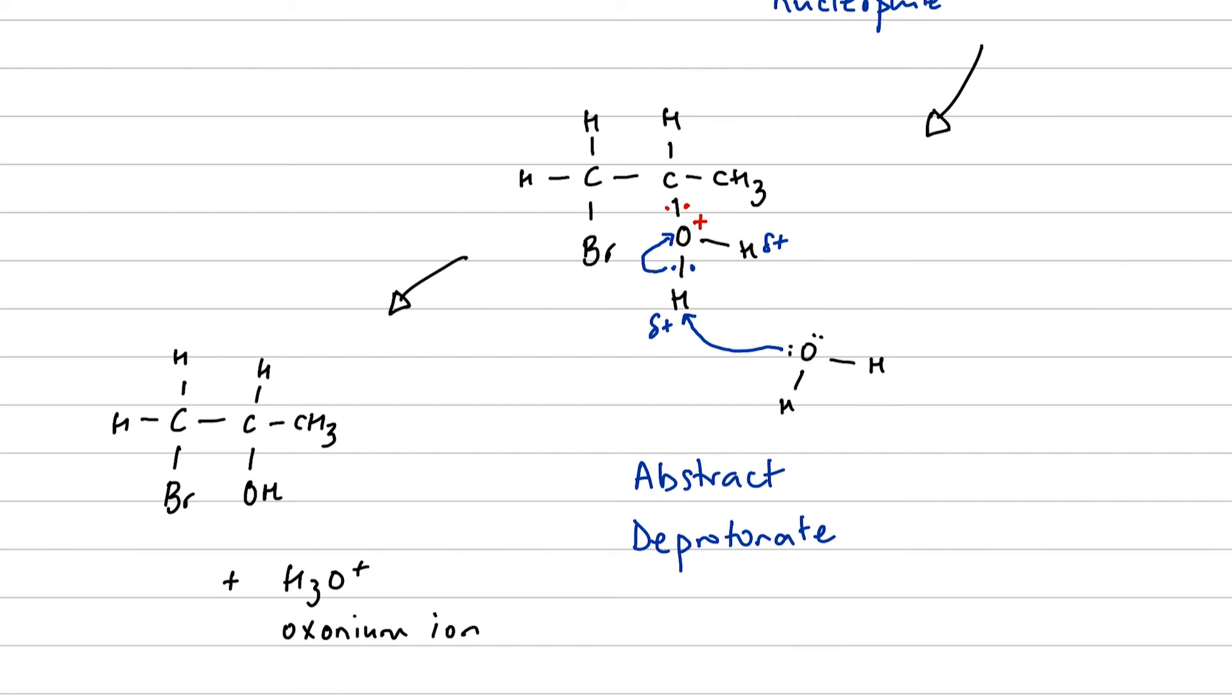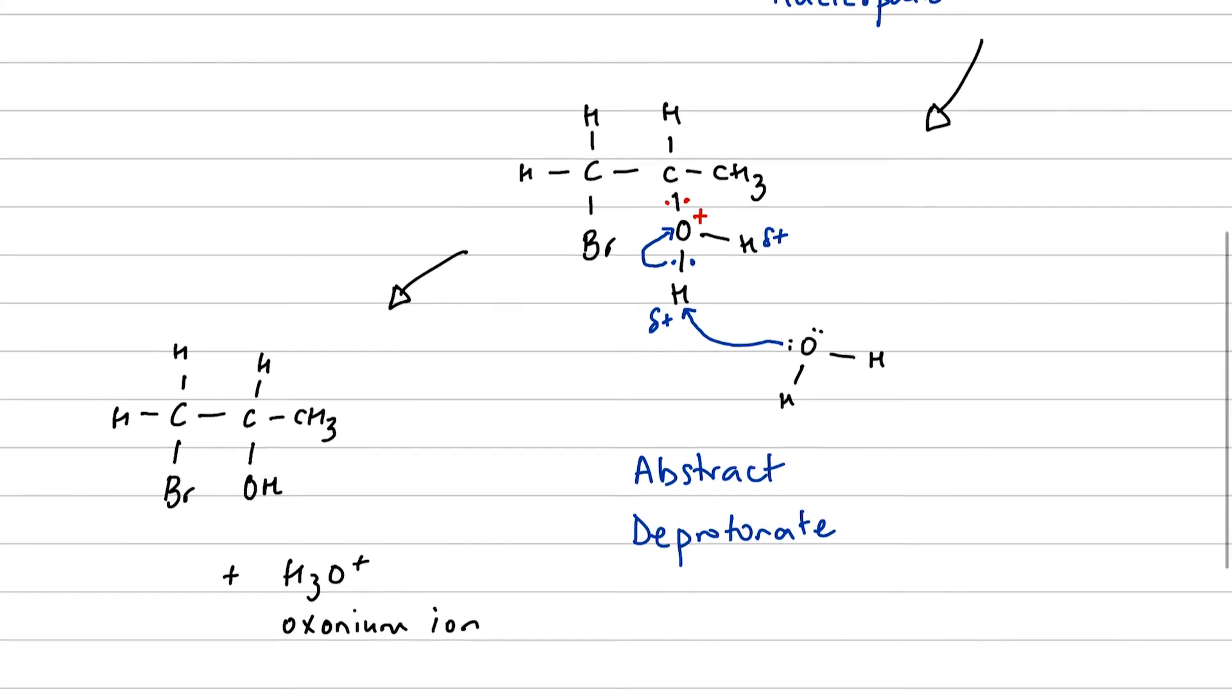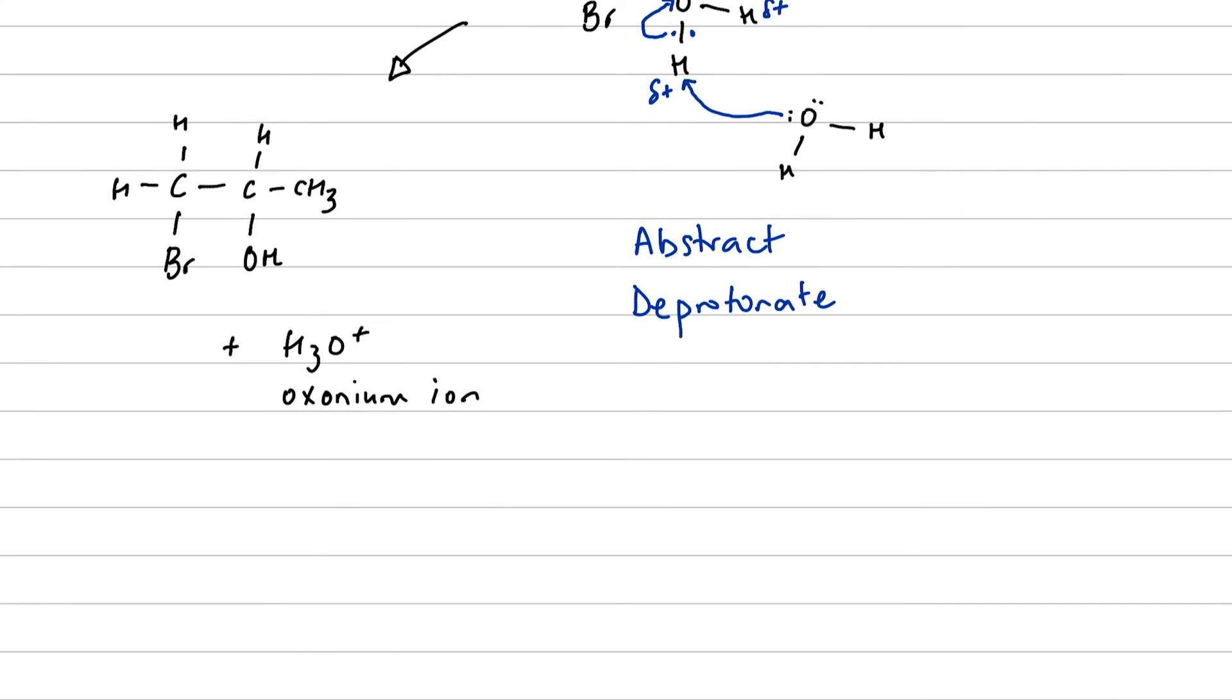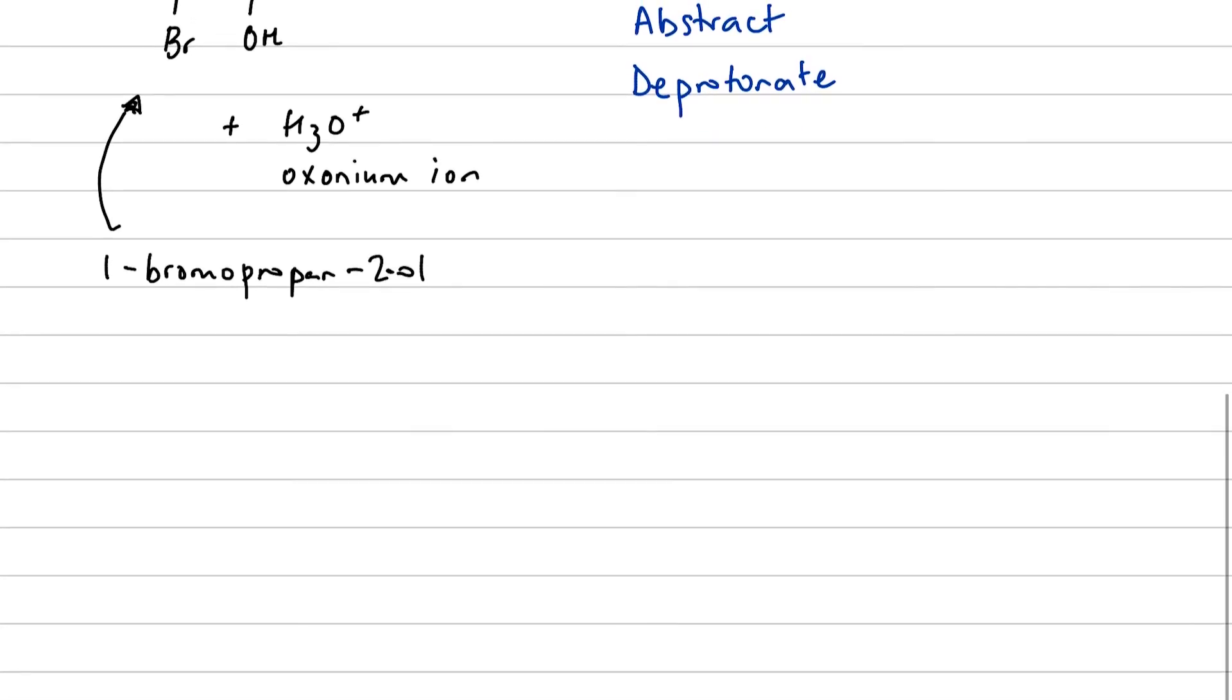How are we going to name our product? Well, it is going to be, let's call it 1-bromopropan-2-ol. So the alcohol takes preference. So we'll name it from the right: 1-bromopropan-2-ol. This is our product there. Once again, if you're writing overall equations with reaction conditions, check your syllabus, check your textbook so that you use the reaction conditions that they want you to use, because there's always more than one way of doing something.